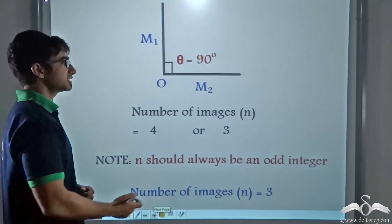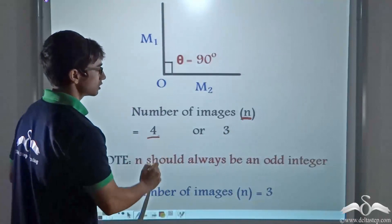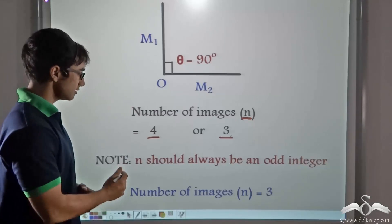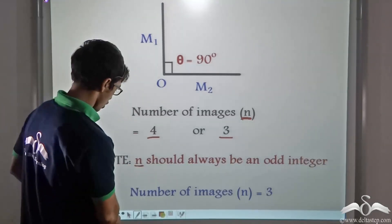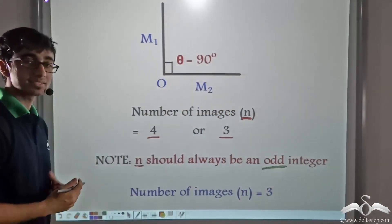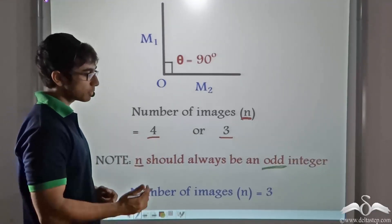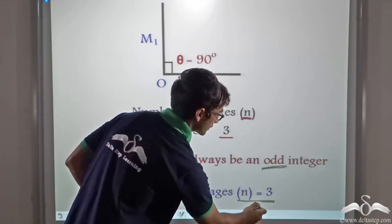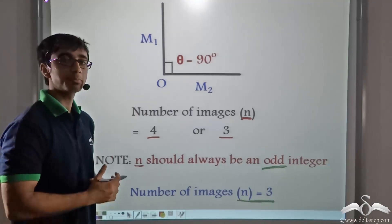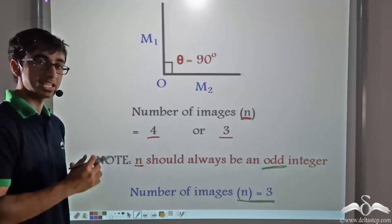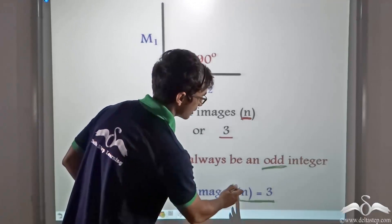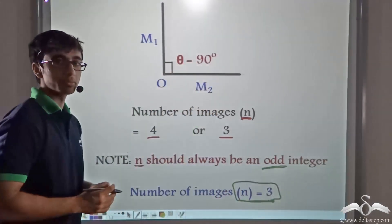So the number of images N is coming out to be 4 or 3. Now, N should always be an odd integer. Among 4 and 3, which one is an odd integer? 3. So the number of images being formed is 3. Does this verify the formula? Yes! Because when we performed the mirror experiment, we obtained 3 images, and when we verified the formula with the same angle, N comes out to be 3. So the formula holds true.